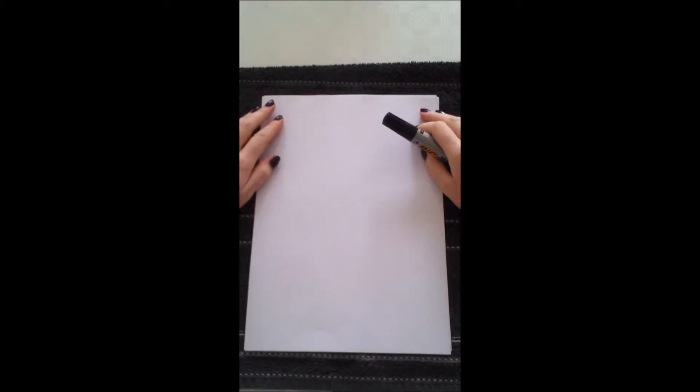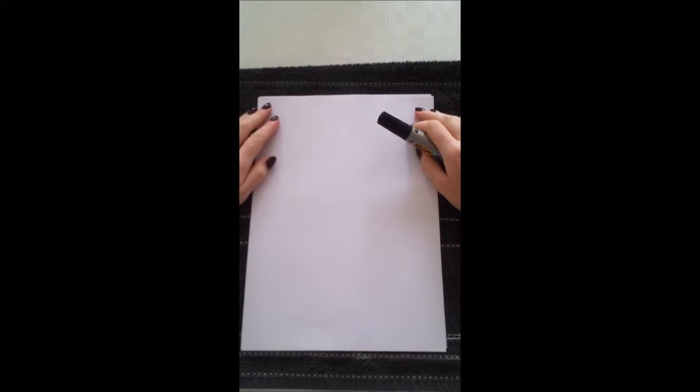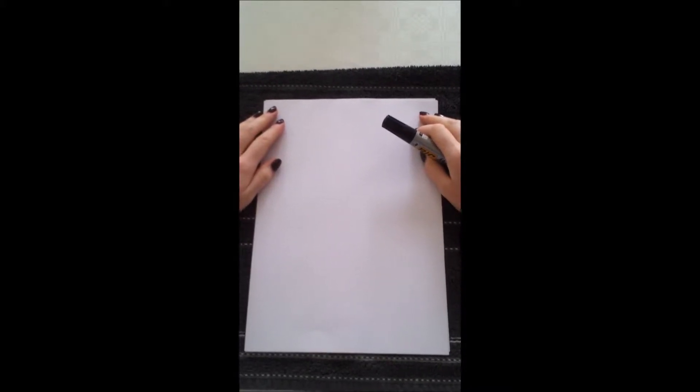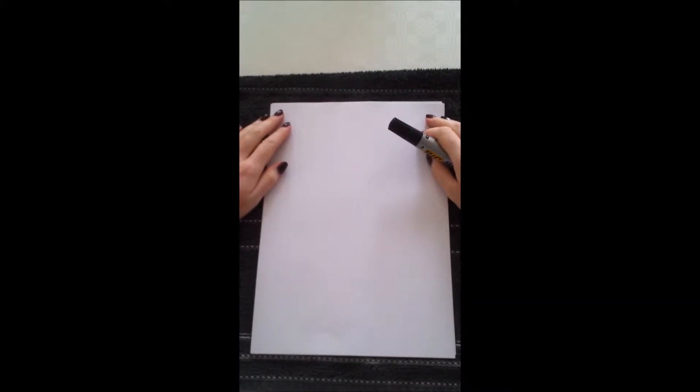Hello everyone. Today we're going to be drawing a penguin. So let's get started. For the head you need to draw an upside down C shape. Something like this.